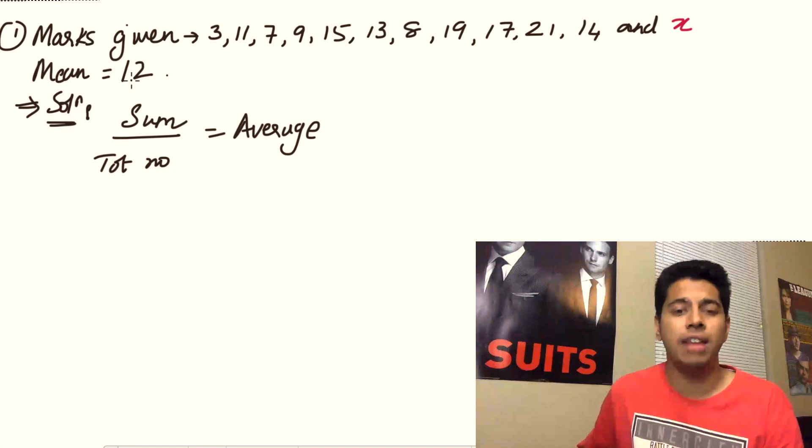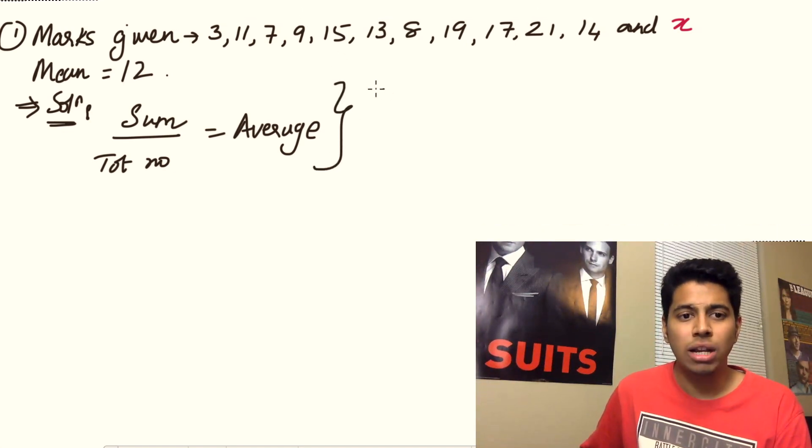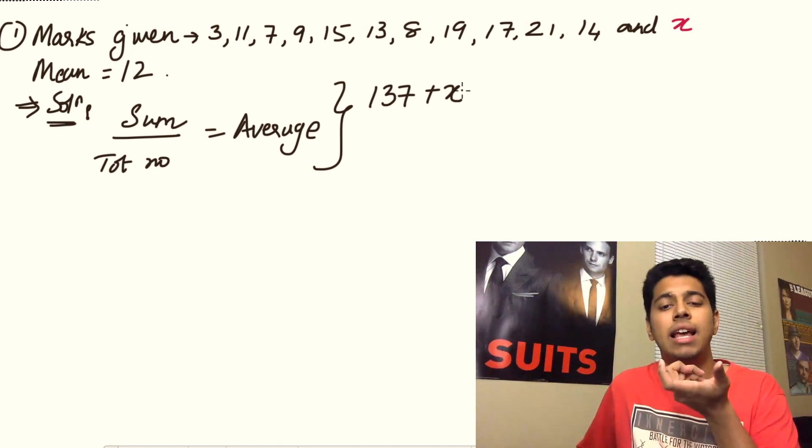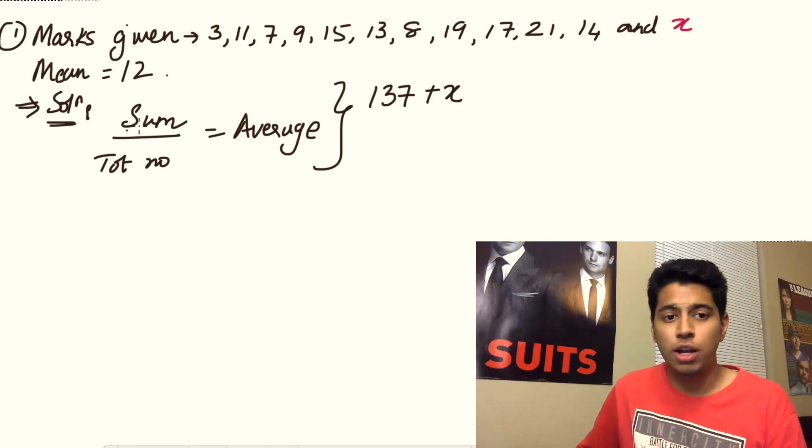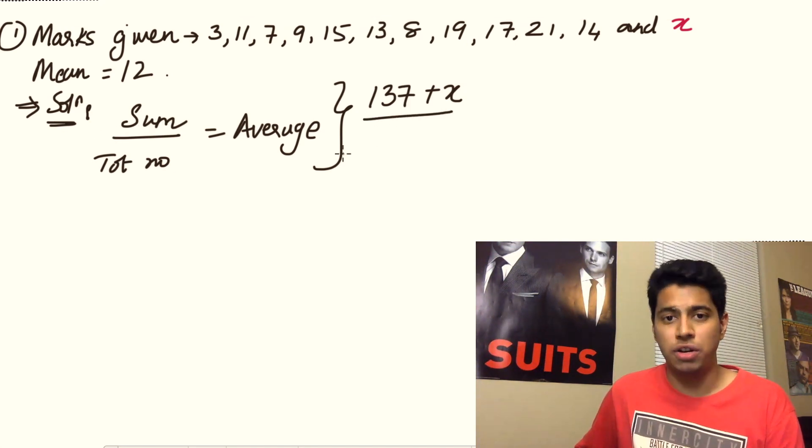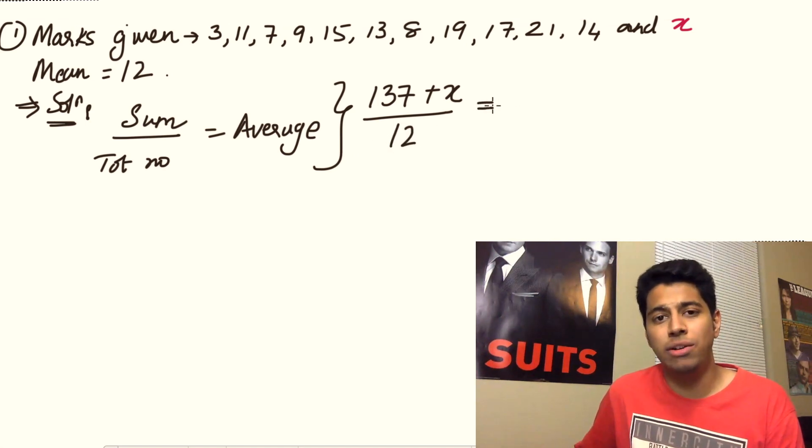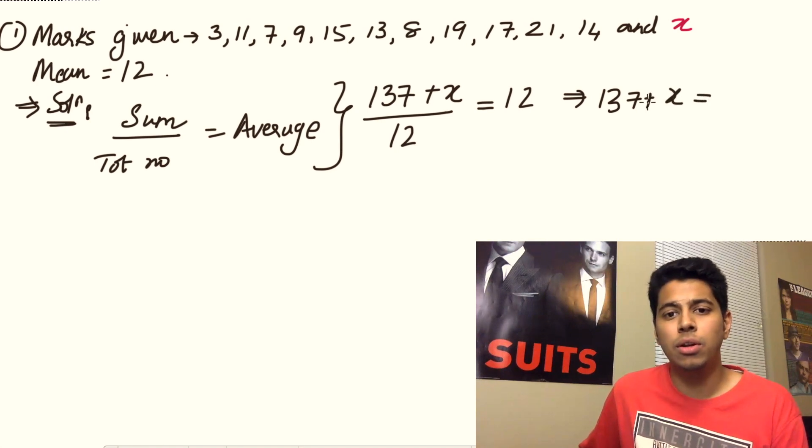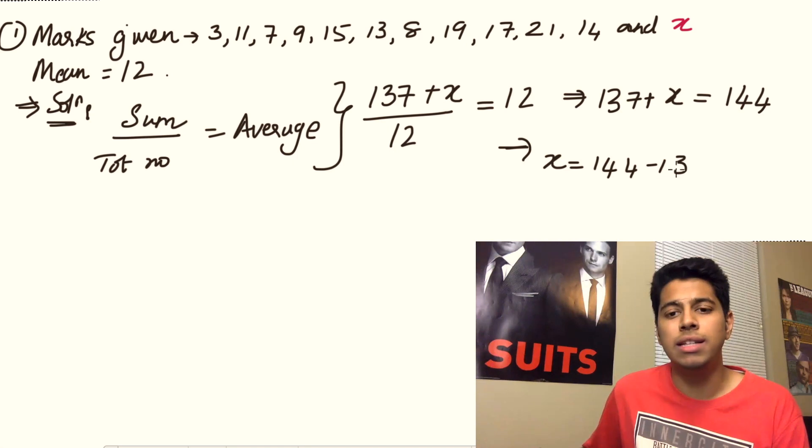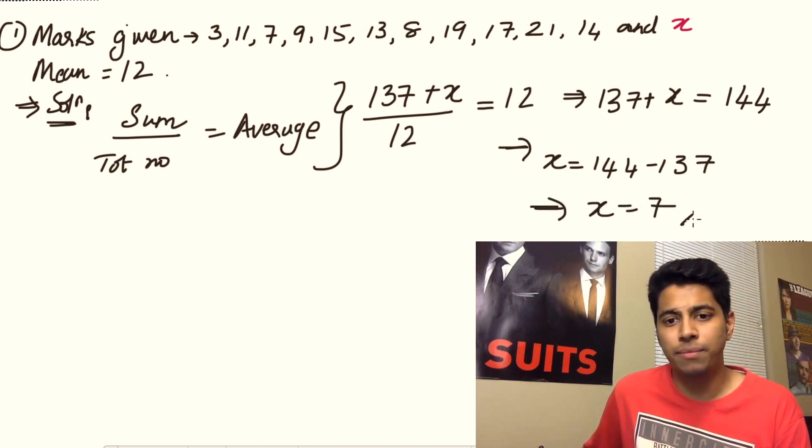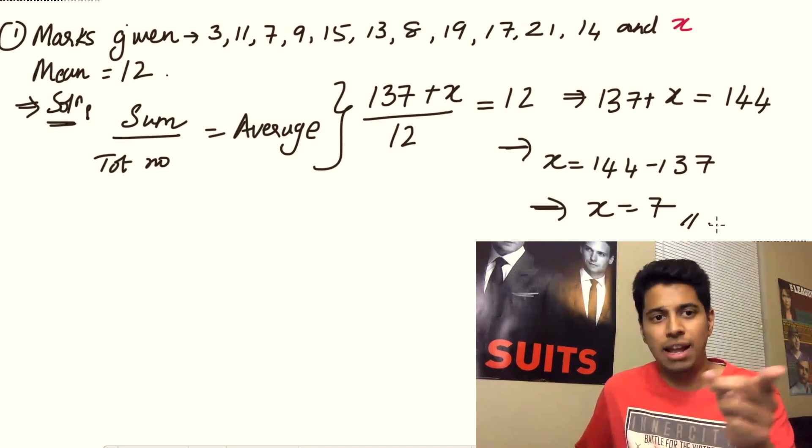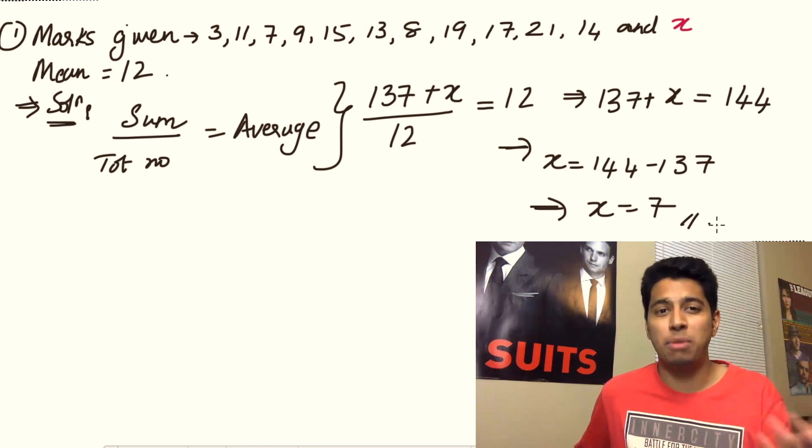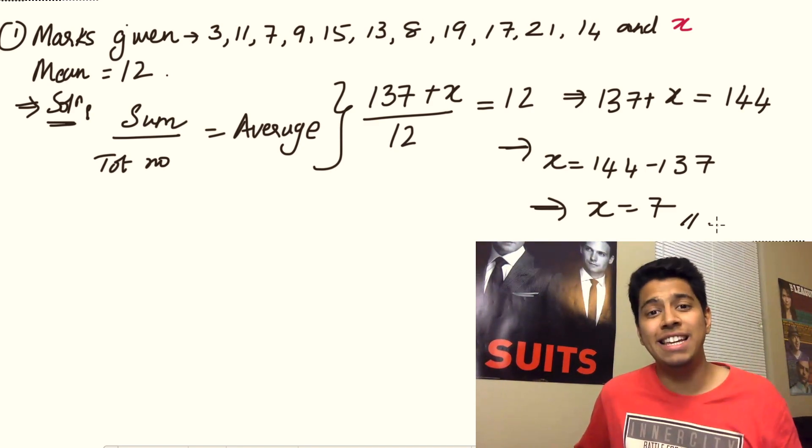First, you need to find the sum of all of this. Add up 3, 7, 11, 9, 15, and so on. If you add it up, it comes to 137 plus x. So 137 plus x is the total marks of your whole class. Now plug it back into the formula. Your sum is 137 plus x divided by the total number of children, which is 12, equals the average, which is 12. So 137 plus x divided by 12 equals 12, which implies that 137 plus x equals 144. Hence x equals 144 minus 137, which means x equals 7. To verify this, you can put x back as 7, add all of those up and divide by 12. It comes to 144, so 144 by 12 is in fact 12, which verifies your answer. Easy? Let's go into problem number two.